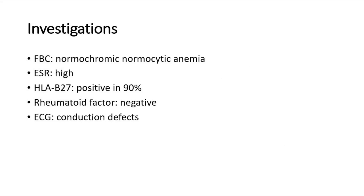For investigations, full blood count may show normochromic normocytic anemia. ESR will be high. HLA-B27 is positive in 90% of cases. Rheumatoid factor is negative, and ECG may show some conduction defects.